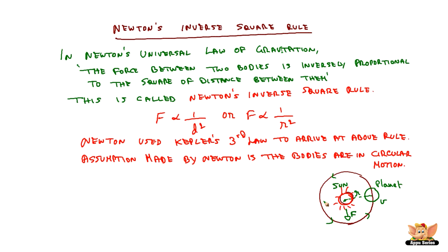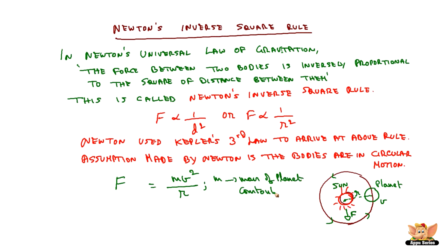So F is proportional to 1 by r² as per the inverse square rule. We will see how F can be arrived at for this sun-planet example. The centripetal force that acts on the planet keeping it in the circular orbit — where the planet is moving with velocity v — is F = mv²/r. Here, m is the mass of the planet, which is a constant. So F is proportional to v²/r — let us call this equation number one.